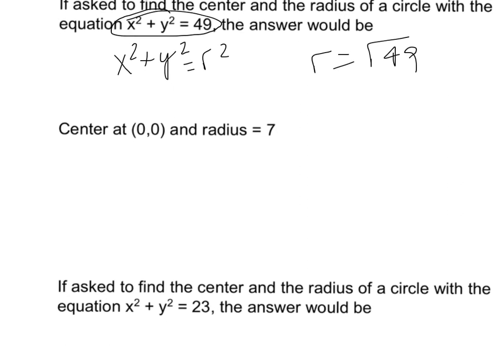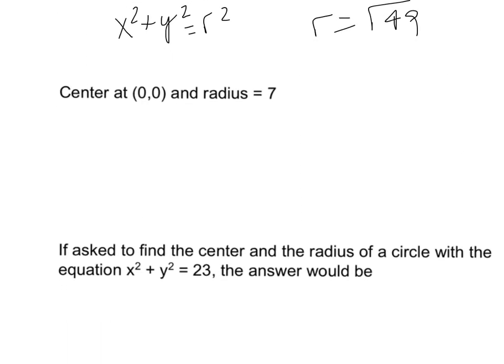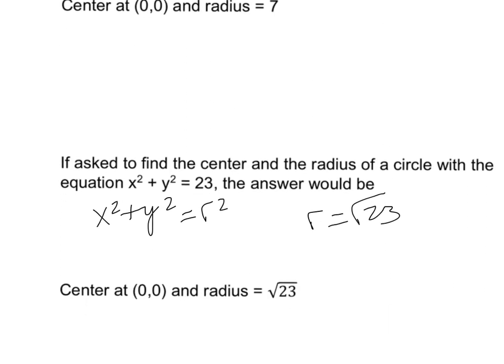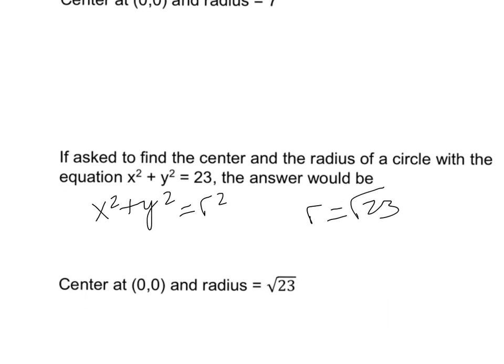If asked to find the center and radius of another circle, write the formula x squared plus y squared equals r squared. The center is at (0, 0), and the radius is the square root of 23. That may seem odd, but that's exactly how you leave it — it would be somewhere between 4 and 5, closer to 5.